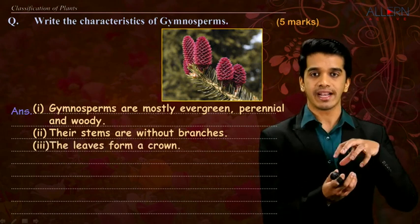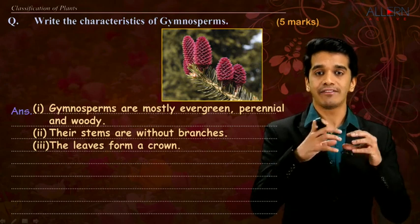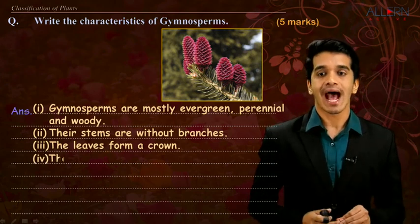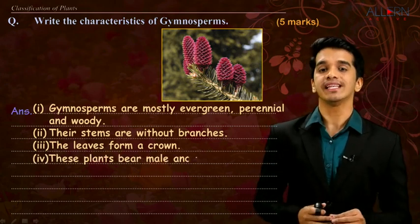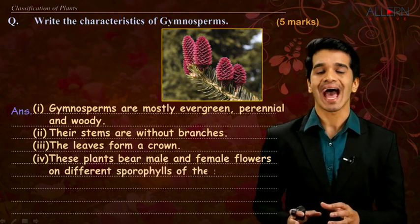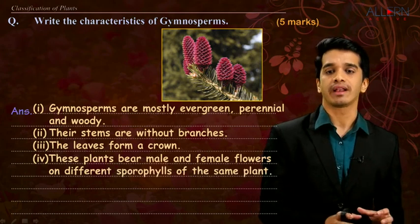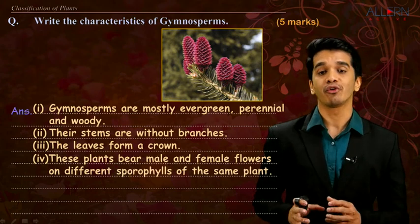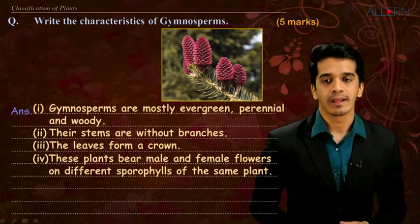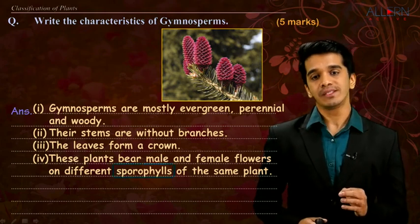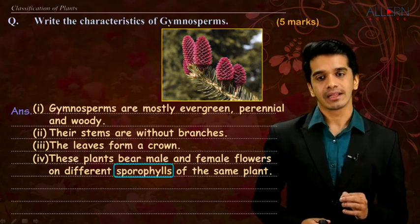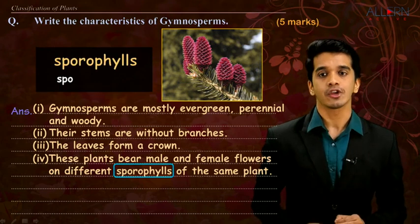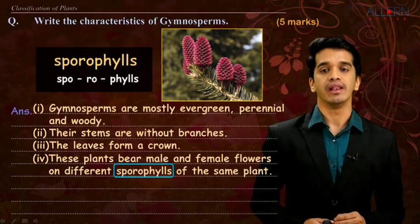If you see at the center, just like a cycas, the leaves form like a crown. The fourth point: the plants bear male and female flowers but on different sporophylls of the same plant. The word is pronounced as 'sporophyll'.